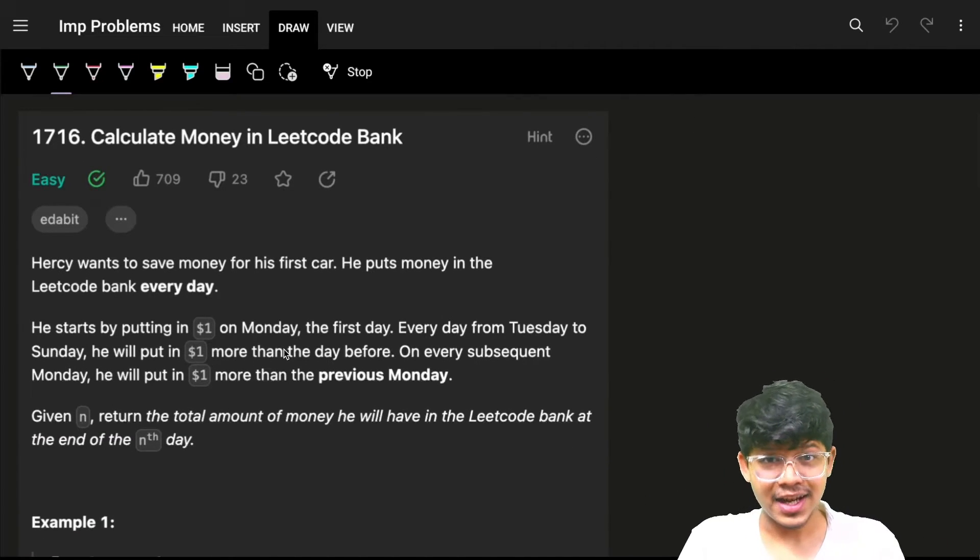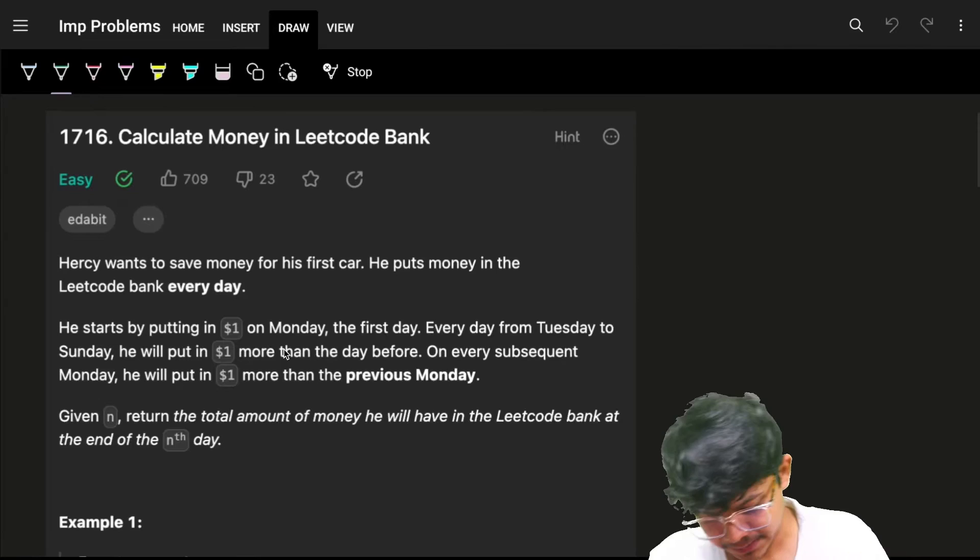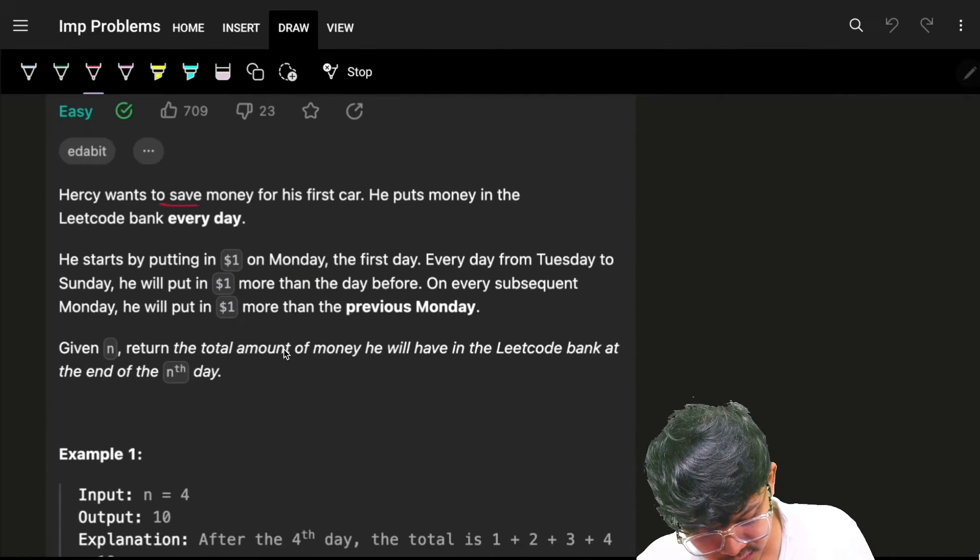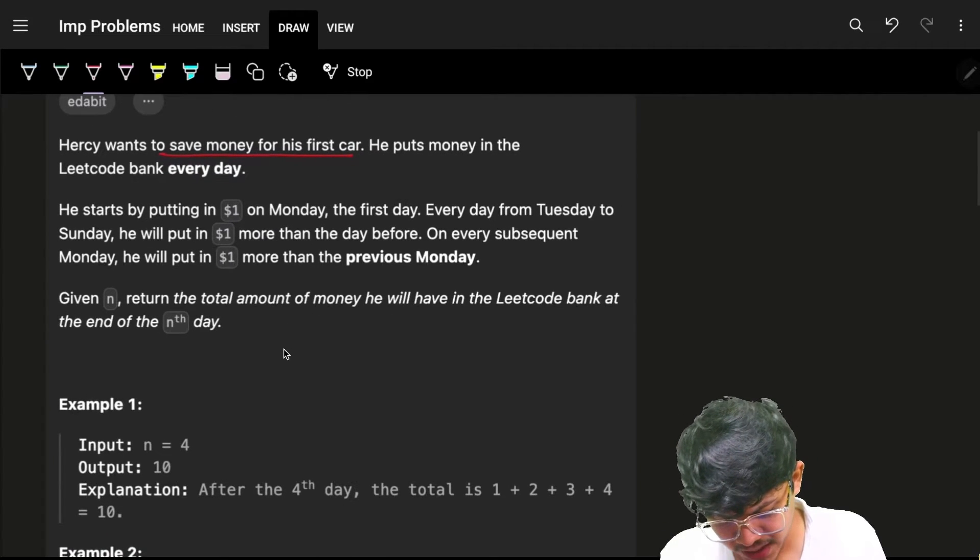Let's see what the problem says and how we can solve it most optimally. Now, it just says that Hersey wants to save money for his first car. He puts money in the LeetCode bank every day.